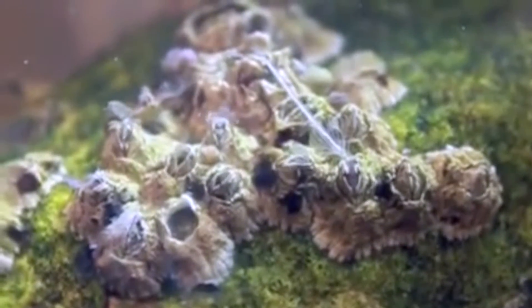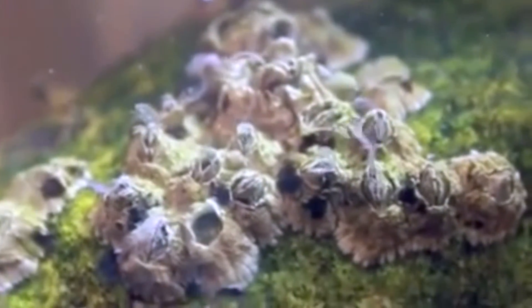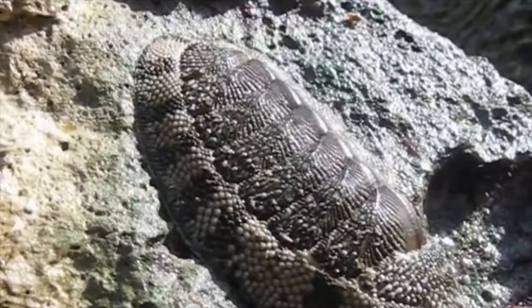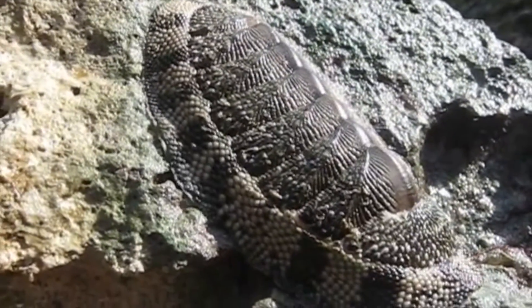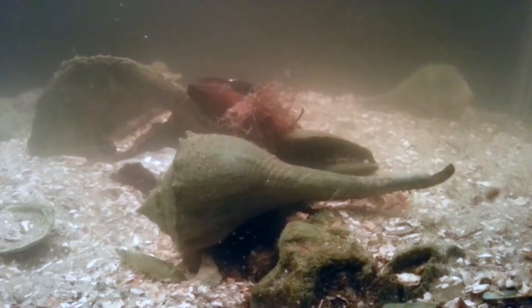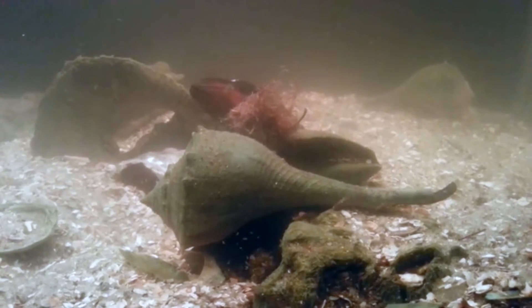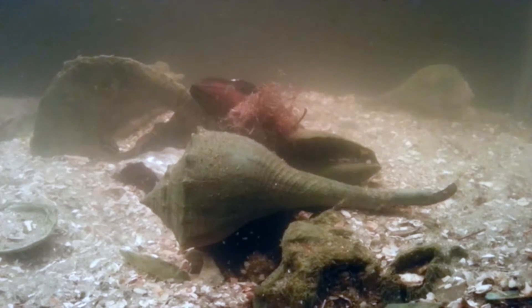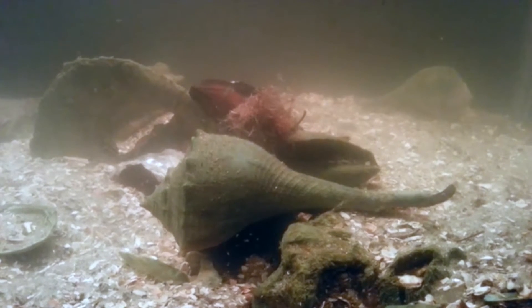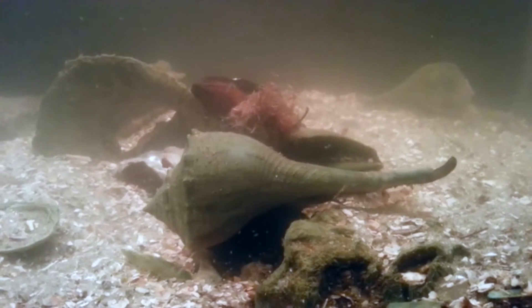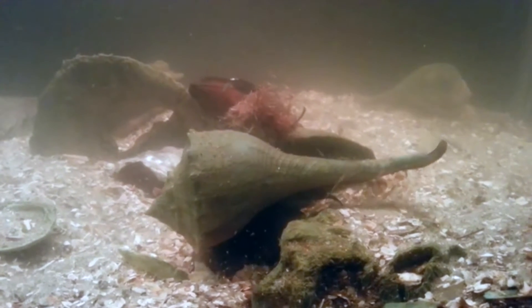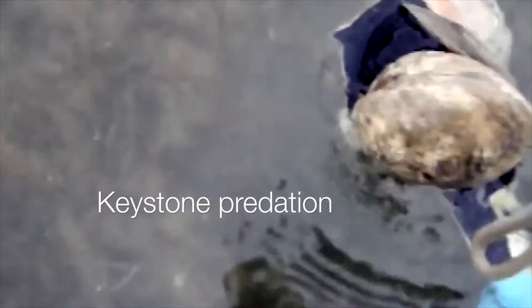Starfish also prey on barnacles and chitons. In the absence of starfish predation, some of the superior competitors that are preyed on by the starfish, such as the whelk, will exclude other species and reduce overall diversity. This is known as keystone predation.